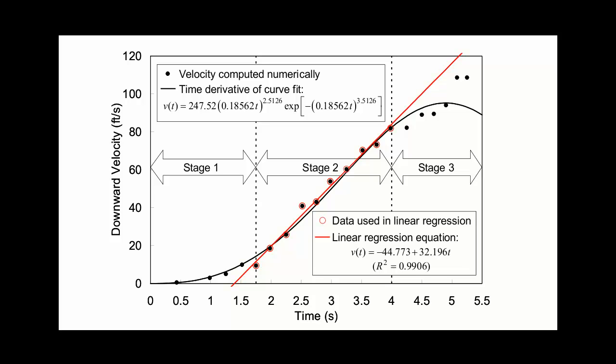Acceleration is the rate of change of velocity, so you can read it directly from the graph by measuring the slope of the line. During the interval labeled Stage 2, the slope of the red line indicates that the speed is increasing by 32.196 feet per second each second. This is the acceleration a rock would experience if you dropped it over a cliff. It's the steepness of the slope in Stage 2 that proves the building underwent freefall acceleration.